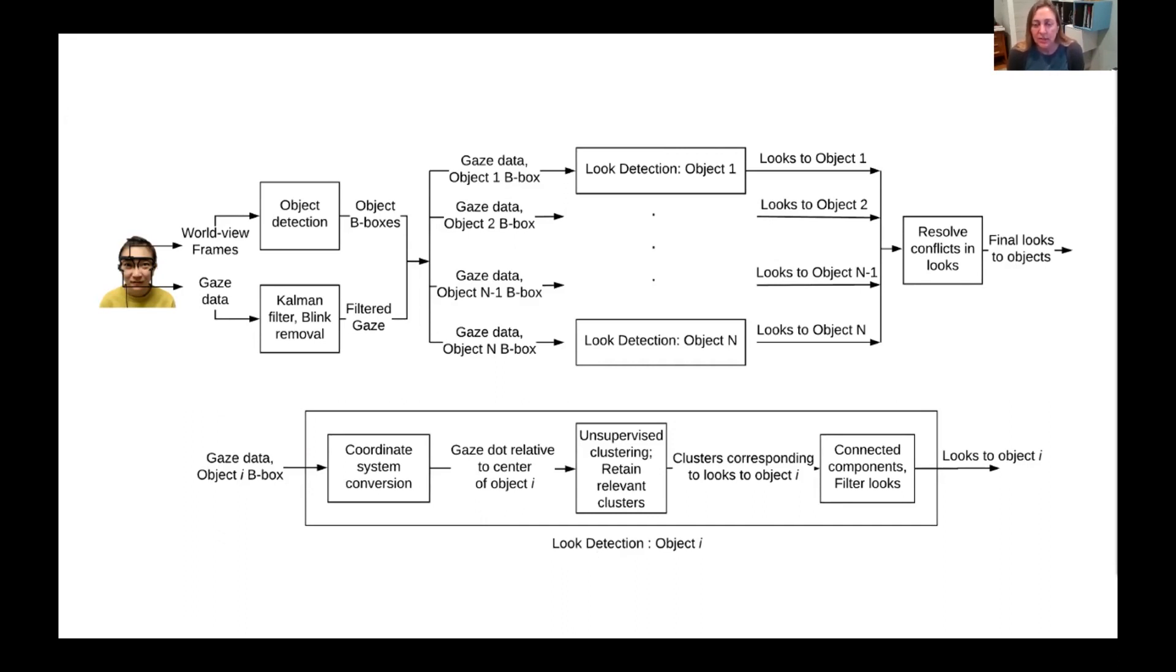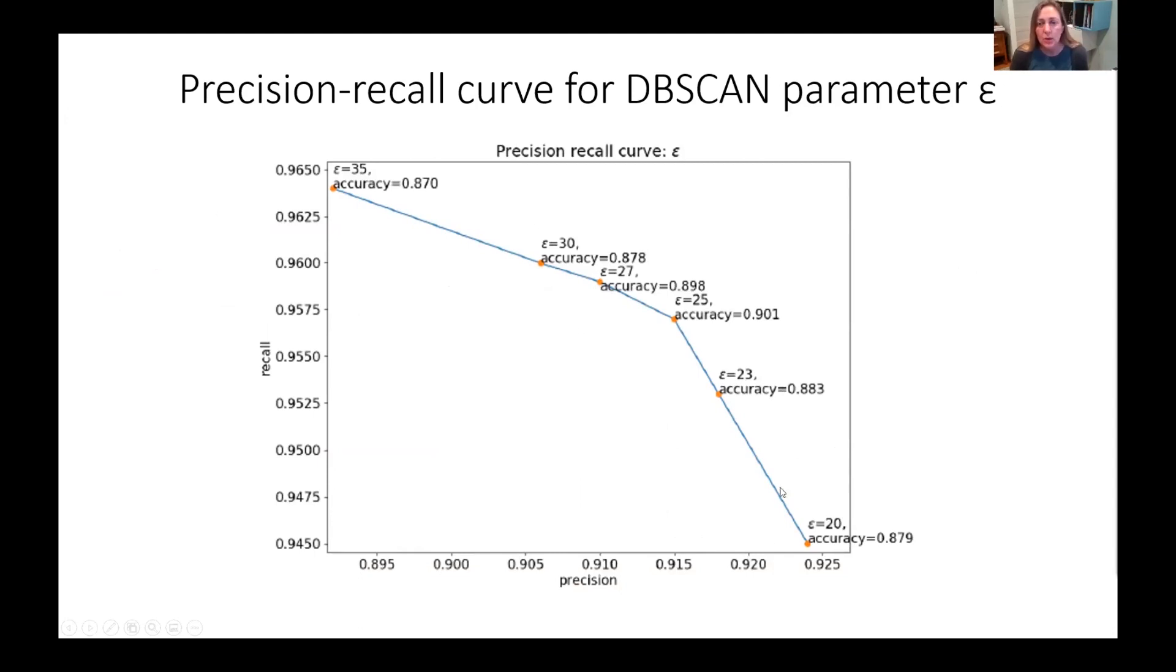Once the clusters are obtained, we only need to retain the clusters in a small region centered around the origin, since we perform a separate clustering to find the looks to each object. For this, we examine the detections of an object across all frames and find the dimensions of the maximum bounding box around each object. Next, we retain the clusters whose centroids fall inside 90% of the maximum bounding box for that object centered on the origin.